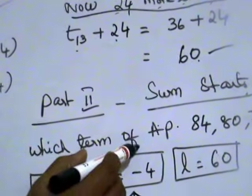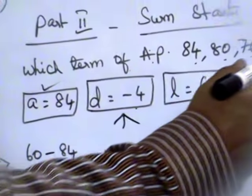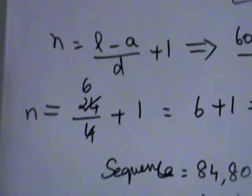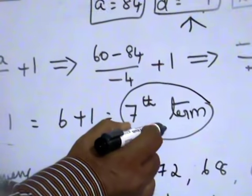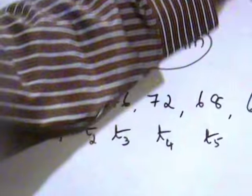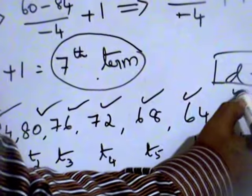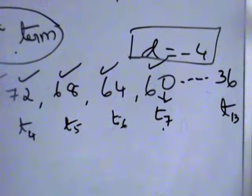Now, which term of the AP 84, 80, 76, ... equals 60? A is 84, D is minus 4, last term L is 60. Using N = (L − A)/D + 1: N = (60 − 84)/(−4) + 1 = (−24)/(−4) + 1 = 6 + 1 = 7. The 7th term is 60. Verifying the sequence: 84, 80, 76, 72, 68, 64, 60 — yes, the 7th term is 60, and the 13th term is 36.